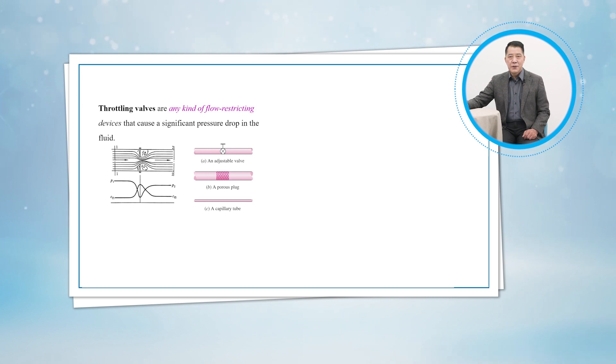As we have shown in Project 2, the enthalpy of the fluid remains approximately constant during such a throttling process. Unlike turbines, they produce a pressure drop without involving any work.